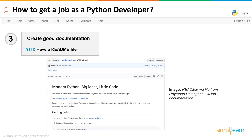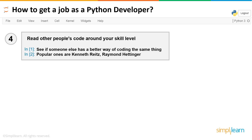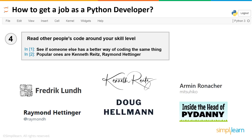Here we have a screenshot of the README file created by Raymond Hettinger, present in his GitHub repository. Tip number four: Raymond Hettinger and Kenneth Reitz are some very popular personalities on GitHub with a very unique, neat, and organized style of coding. One of the great ways to develop your coding skill is to look at other people's code at your own skill level. If you're an intermediate coder, look at someone's GitHub who codes at the intermediate level — someone who writes the same kind of code but in a better manner.